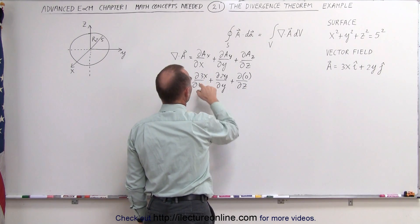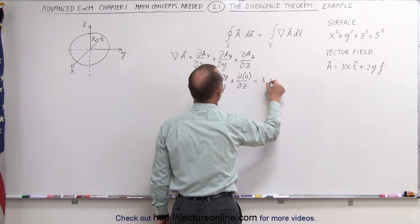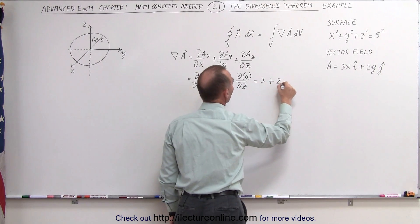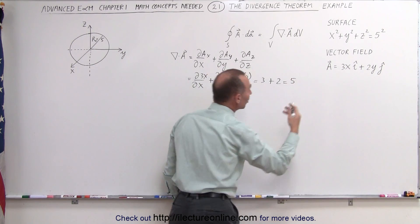When we take the partial with respect to x, we get 3, plus when we take the partial with respect to y, we get 2, which means the divergence is simply the number 5.